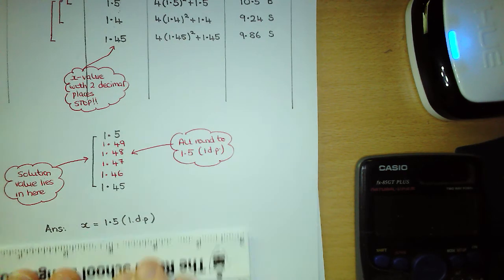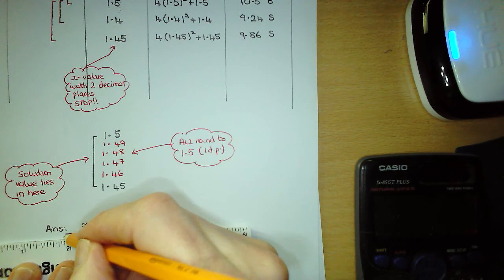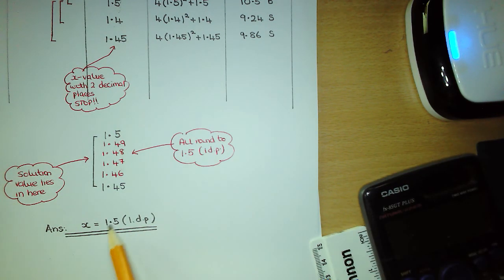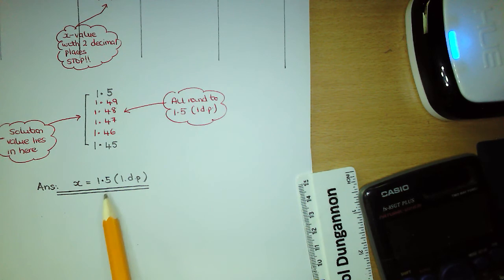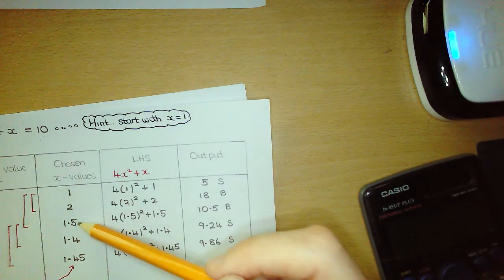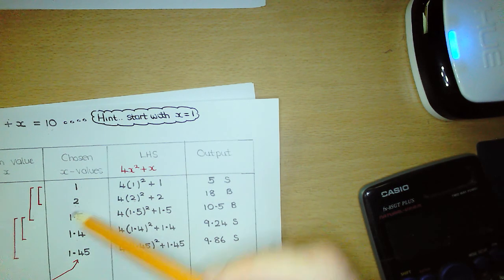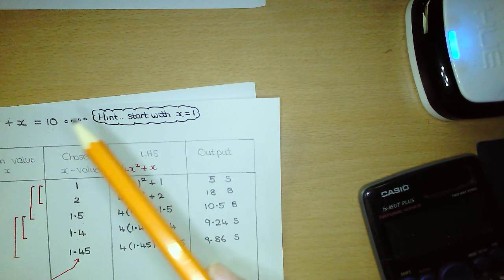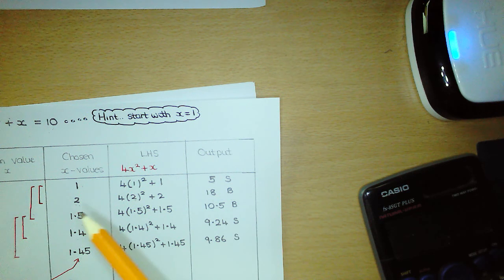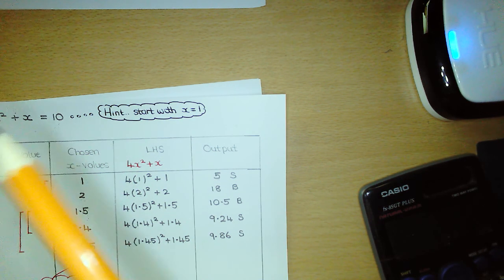We can check to see if we're right. We have found the solution value to one decimal place that gives the closest output to the target number of 10. There is no other x value to one decimal place that gives an output closer to the target. Looking back at the table at all x values to one decimal place — there are only two: 1.5 with output 10.5, and 1.4 with output 9.24. Since 10.5 is closer to the target of 10 than 9.24 is, x equals 1.5 is confirmed as the solution to one decimal place.